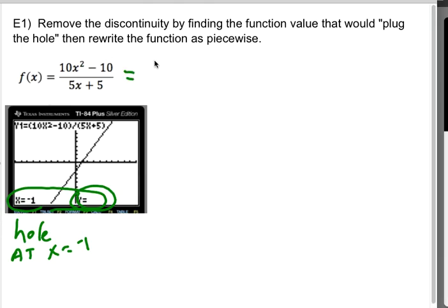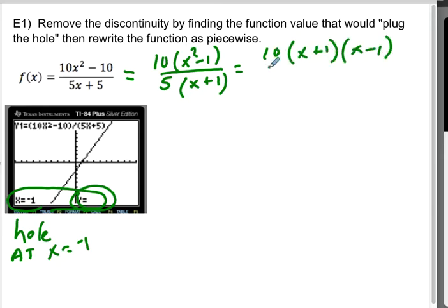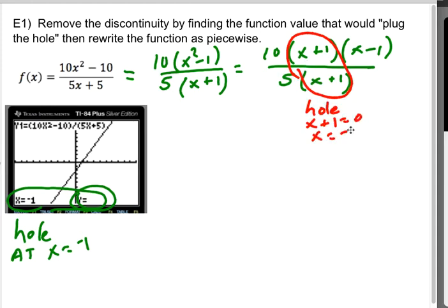So let's go ahead and factor. If I factor out a 10, I get an x squared minus 1 on top. And on the bottom, if I factor out a 5, I get an x plus 1. Well, if I keep factoring, that's a 10 times x plus 1 x minus 1 over a 5 times an x plus 1. If I clean this up, first off, I can see that right here, that's why I have a hole at x plus 1 equals 0, which is x equals negative 1. So that jives with what I have over here for my picture.